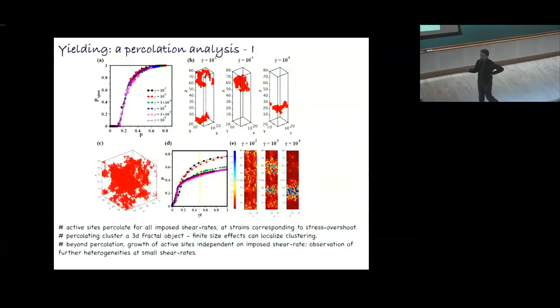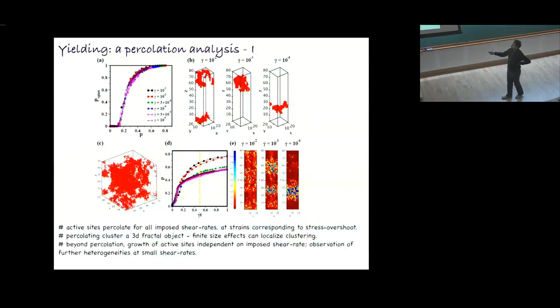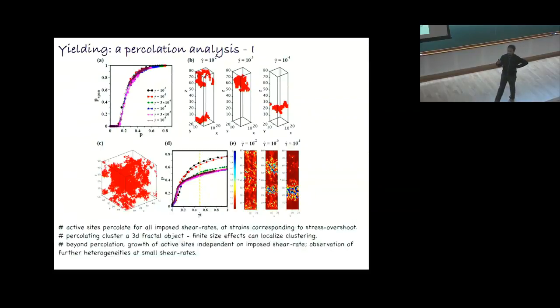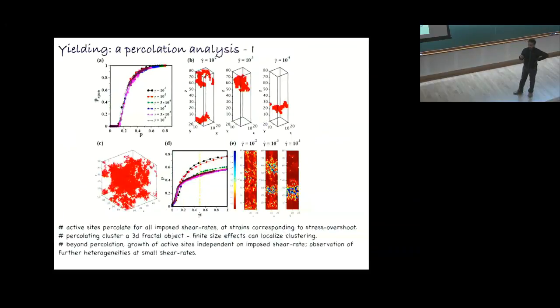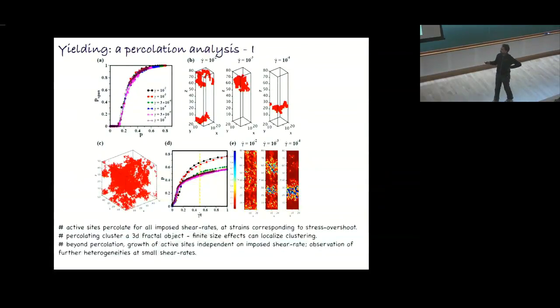What we see is that there's a percolation transition of these active sites. We see this percolation transition for all the applied shear rates, independent of all the shear rates. What I'm plotting here is the fraction of active sites and fraction of these active sites which are part of the spanning cluster. This percolation transition is observed for all the imposed shear rates. This percolation transition happens around this stress overshoot, or where the yielding is happening. This idea of a percolation transition has been discussed quite a lot in literature, but there was no quantitative investigation of this. I would say this is one of the first works which has looked at this. This is the kind of geometry of the active mobile cluster, the spanning cluster that you see at the time of percolation.